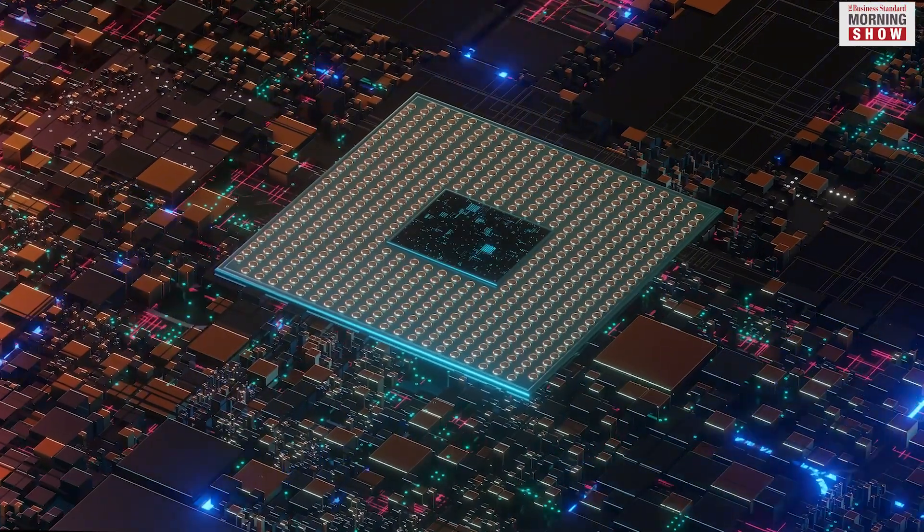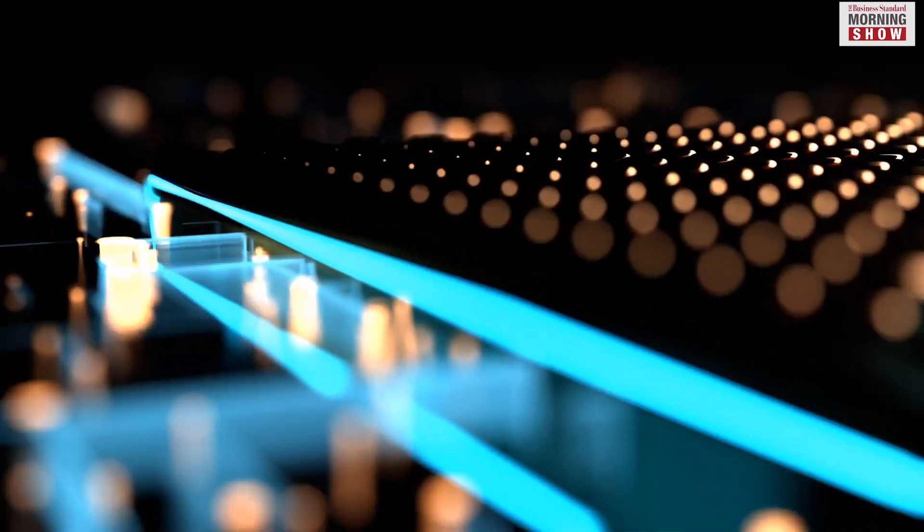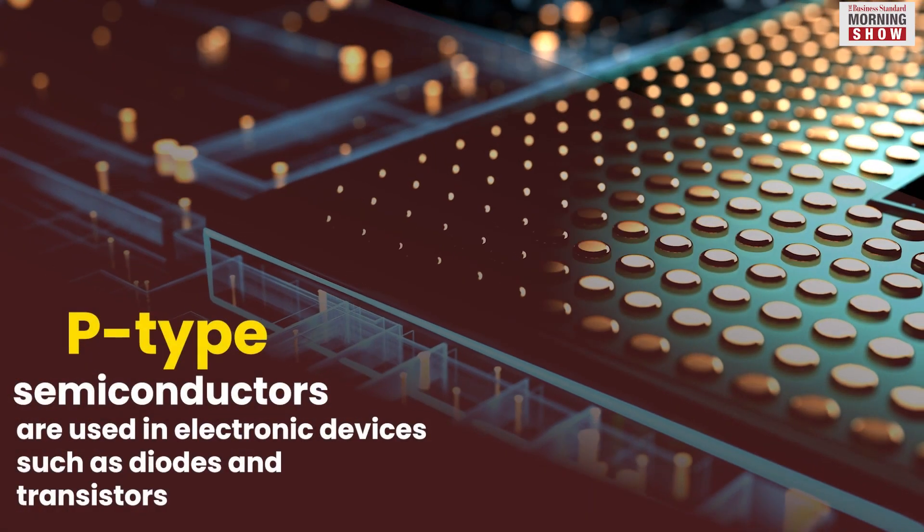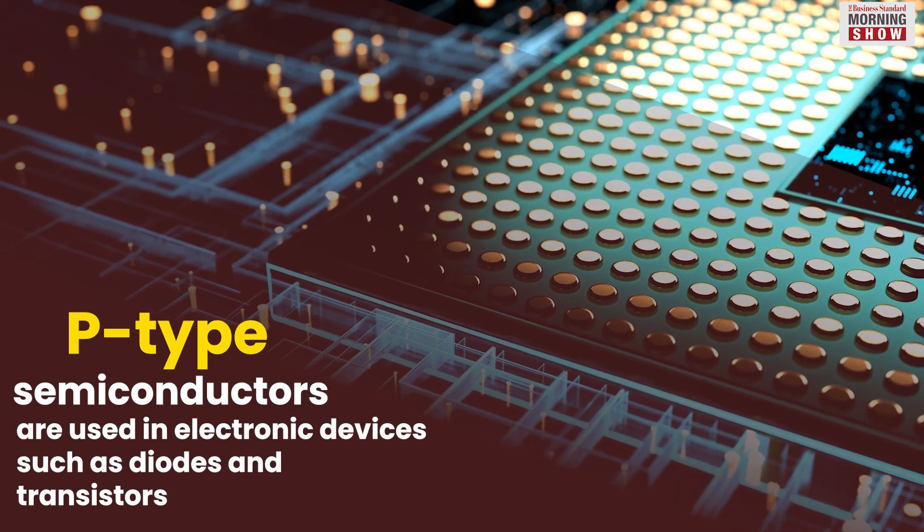These holes create vacancies in the crystal lattice, making the semiconductor conductive in the opposite direction. The P-type semiconductors are used in electronic devices such as diodes and transistors.